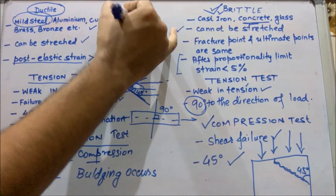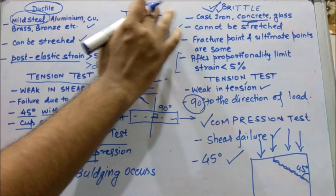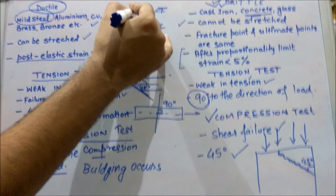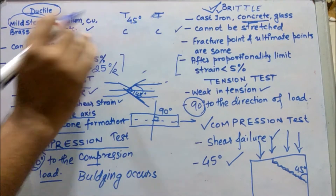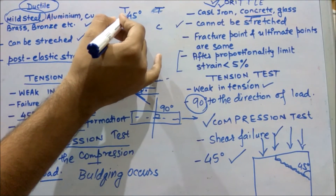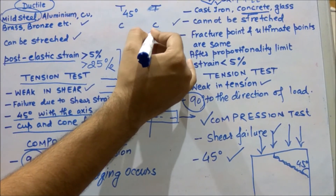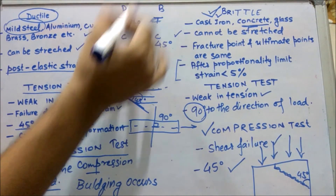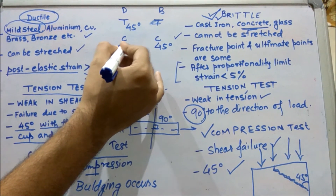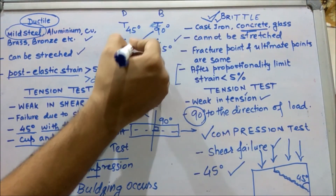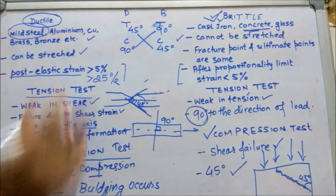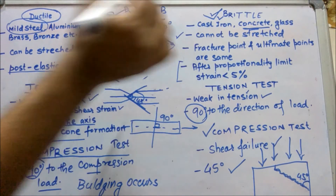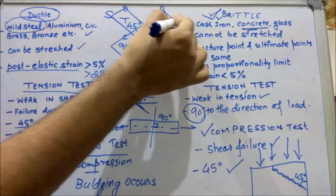To summarize: in a tension test for brittle material, failure occurs at 90 degrees; in compression for brittle material, failure occurs at 45 degrees; for ductile material in tension, failure occurs at 45 degrees; and in compression at 90 degrees. The 45-degree failures are due to shear, and the 90-degree failures are due to compression or tension directly.